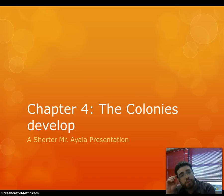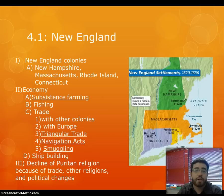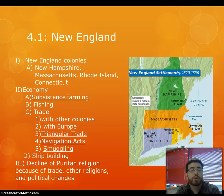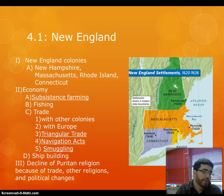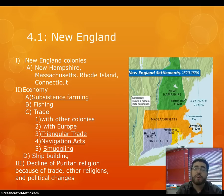So this is Chapter 4, Colonies Develop. We're going to begin by looking at the New England Colonies, which are New Hampshire, Massachusetts, Rhode Island, and Connecticut. If you still have your map, you should already know that. The economy was mostly based off of subsistence farming, where families would just farm enough to feed themselves, not really to sell.